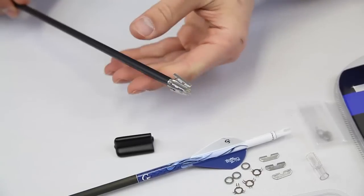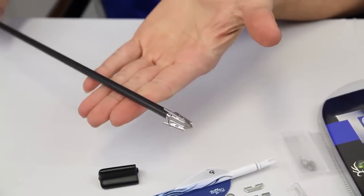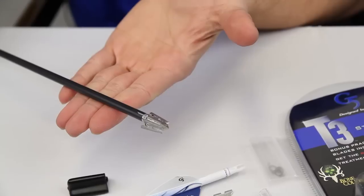Once you have your broadhead tightened into the insert, give it a couple taps to make sure that the blades are in their ferrule nice and tight.